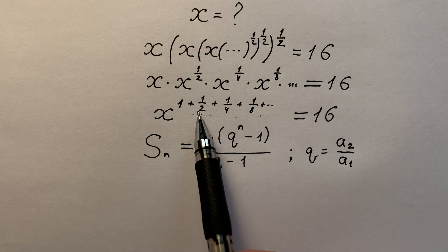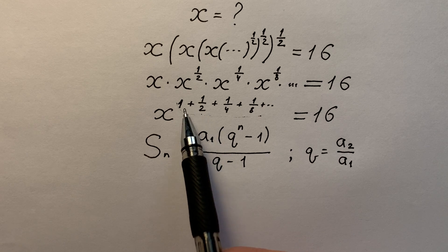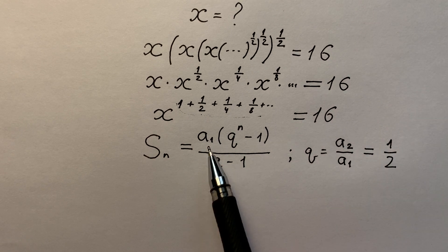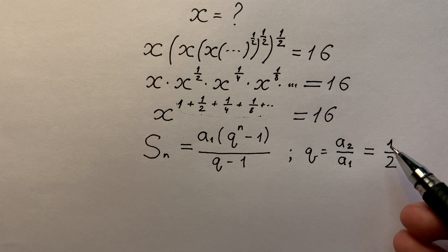q equals to a₂ divided by a₁ or a₃ divided by a₂, a₄ divided by a₃, and it equals to 1 divided by 2. a₁ is the first member and it equals to 1.